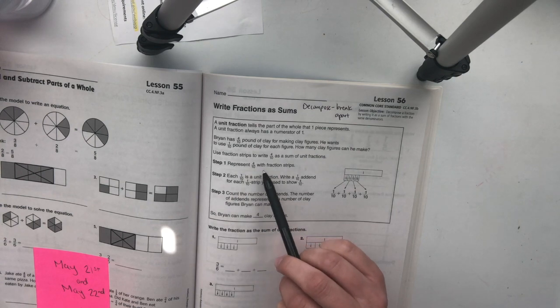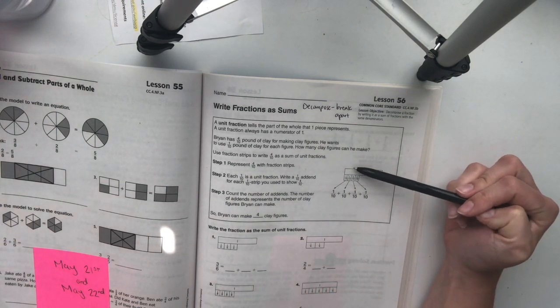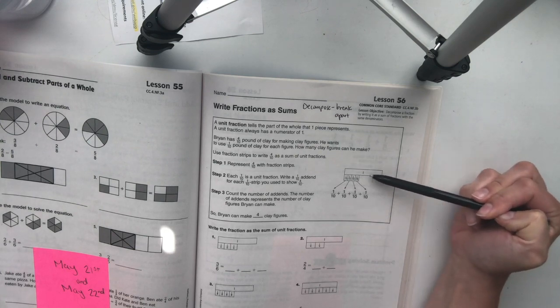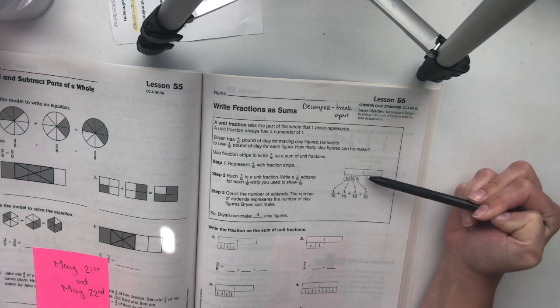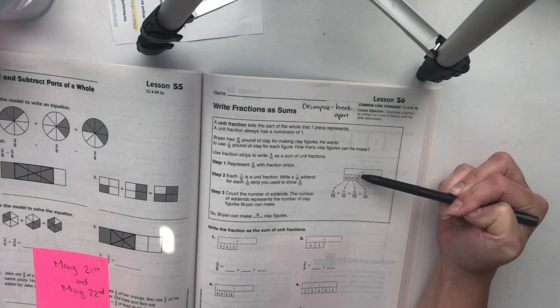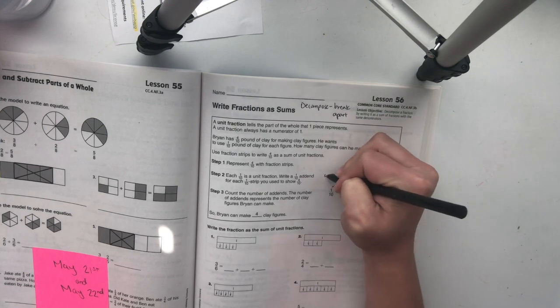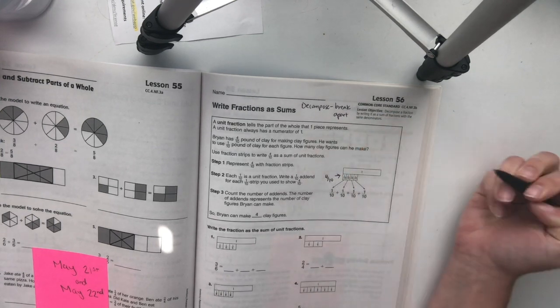So this is step 1, represent 4 tenths with fraction strips. So they have a fraction whole, just kind of to show you where it would fall. And we have 1, 2, 3, 4 tenths right here. So we have 4 tenths. Okay.